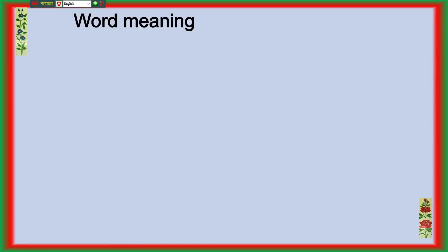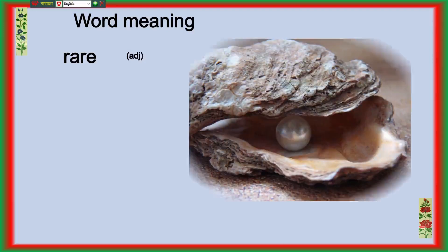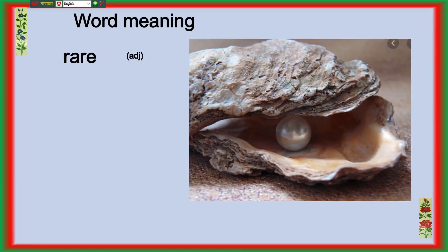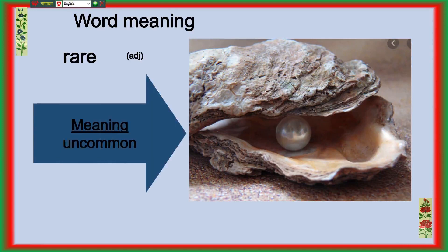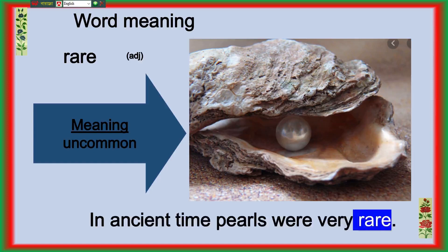Now we will learn some important word meanings. Here we can see the word 'rare'. Rare means uncommon. We can see a pearl in the picture. In ancient times, pearls were very rare.